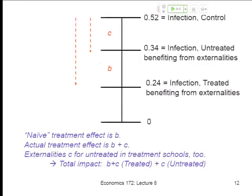In the control group, if you were untreated and no one in your school was treated, average infection was about 52%. If you're untreated but in a treatment community, you get that gain of C — about 18 percentage points. If you were treated in a treatment group, you get the additional gain of B, so your total gain is B plus C.